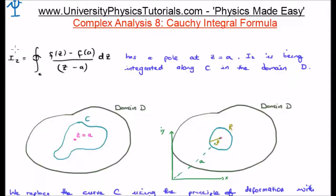I've rewritten our integral i sub 2, which we're looking to calculate on the left side of your screen. This is a pole that z equals a. i2 is being integrated along the curve c in the domain d.